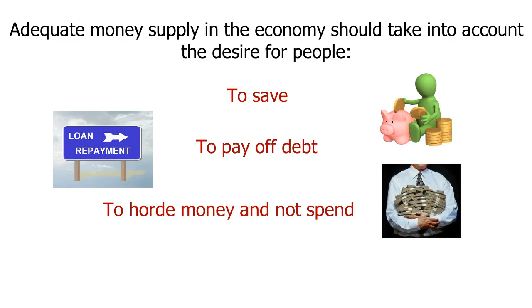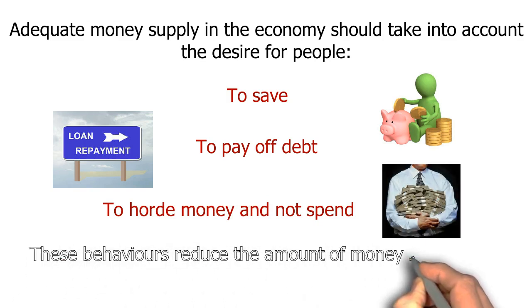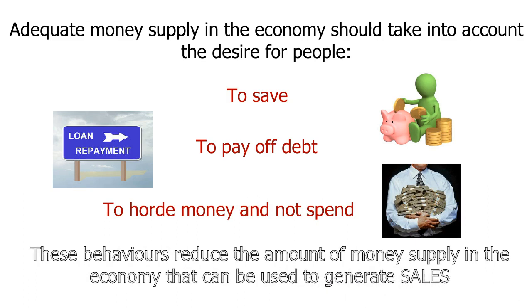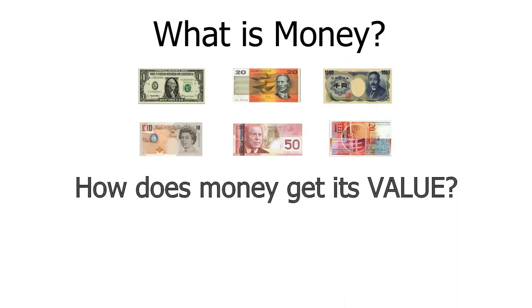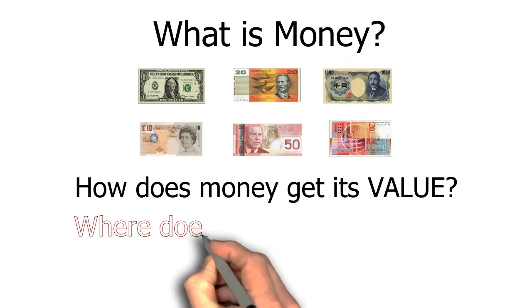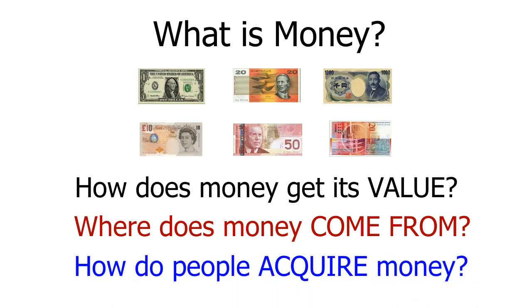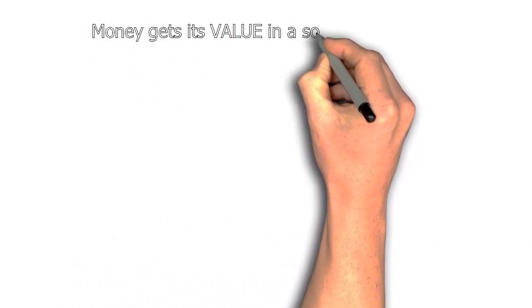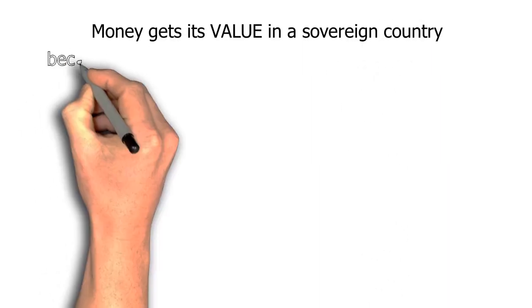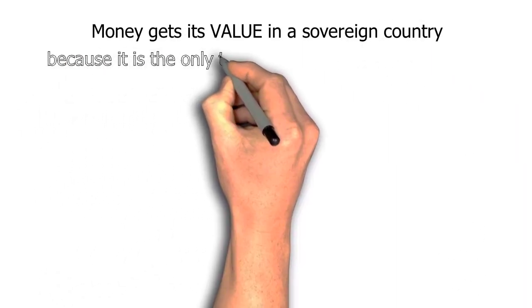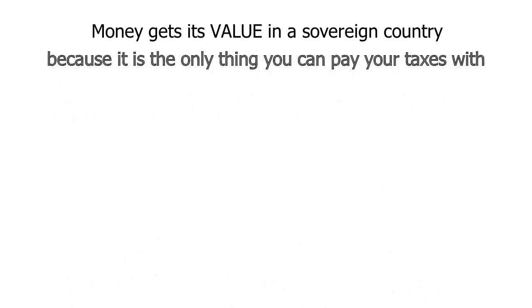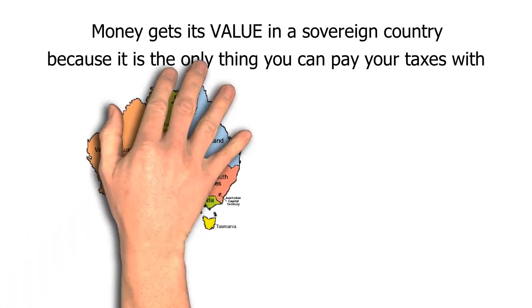Each of these behaviours reduces the supply of money that can be used to generate sales. Given that an adequate money supply is required to generate sales, what actually is money? How does it get its value? Where does it come from? And how do people acquire it? Modern Monetary Theory tells us that money gets its value in a sovereign country because it is the only thing you can pay your taxes with.